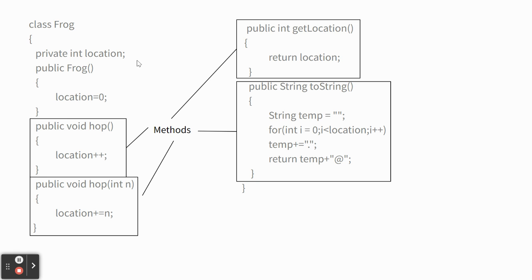Location is declared private, meaning if you're somewhere else trying to work with frogs, you can't access that variable directly. So when I create a frog named frankie and hop it, I don't know where it is. To find out, I have to say 'frankie.getLocation()' and it sends back a value. The last method is toString, which prints dots — one dot for each spot the frog hopped — with an ampersand symbol for the frog.